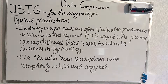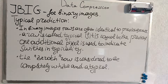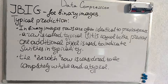An important concept is typical prediction. In binary images, rows are often identical to previous rows. A row is called typical if it's equal to the previous one. One additional pixel is used to indicate switches in typicality — if we know the current row is the same as the previous, we don't have to store it. The zeroth row is considered completely white and typical, because we have to start from something.